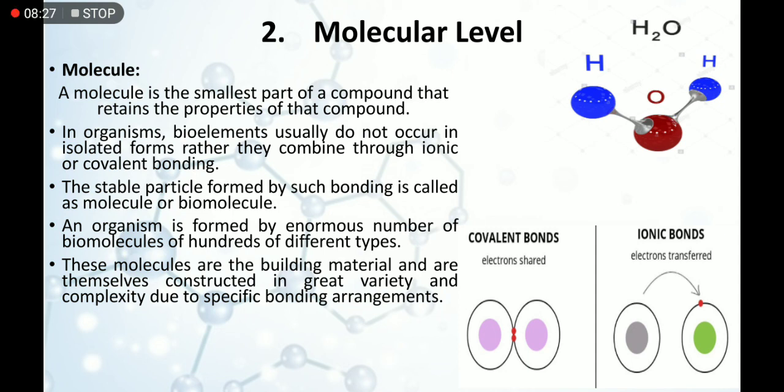These molecules are building materials and are themselves constructed in great variety and complexity due to specific bonding arrangements. We have these molecules in many great varieties with specific arrangements. For example, if we have water, we have a specific arrangement: two hydrogen and one oxygen. Oxygen is in the form of O2, which we inhale. We have broad variety and many arrangements which can make a molecule.